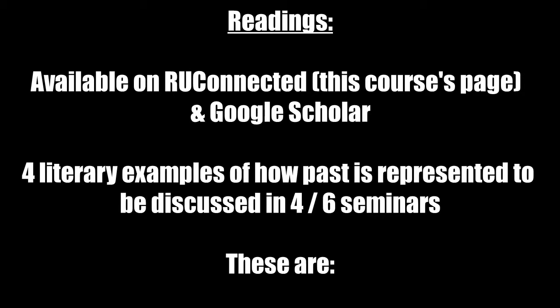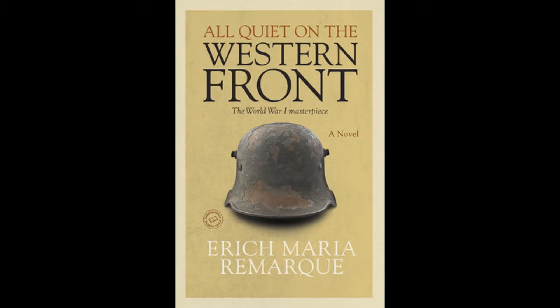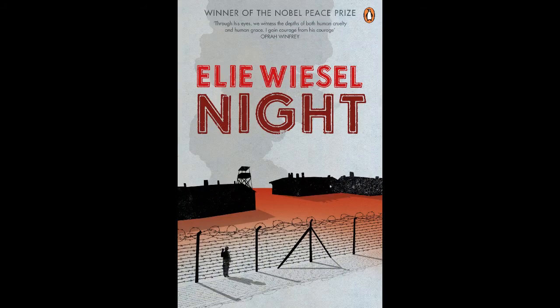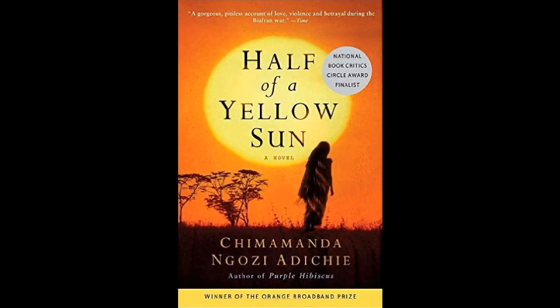Readings related to the course are available on RU Connected and Google Scholar. In addition to these readings, there are four literary examples of how the past is represented. These texts will form the discussion of four of the six seminars held over the course of this semester. These texts are All Quiet on the Western Front, Night, Hiroshima, and Half of a Yellow Sun. These texts are also available on RU Connected. It's up to you to get these readings in a timely manner, read them, and understand them. If you have any questions relating to the readings, please contact your tutor.